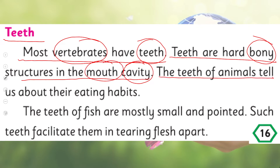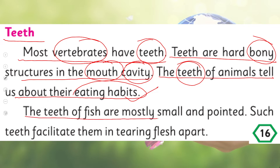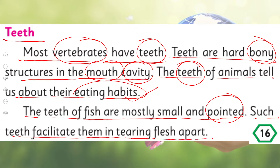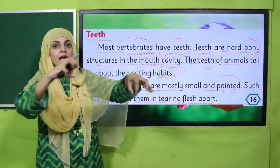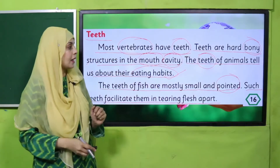The teeth of animals tell us about their eating habits. Daant kis tarah ke hain — yeh hume unki eating habits ke baare mein bhi batate hain. The teeth of fish are mostly small and pointed — machliyun ke daant pointed aur chote hote hain. Such teeth facilitate them in tearing flesh apart — yeh unko gosht ko noachne mein, tear apart karne mein madad karti hain.